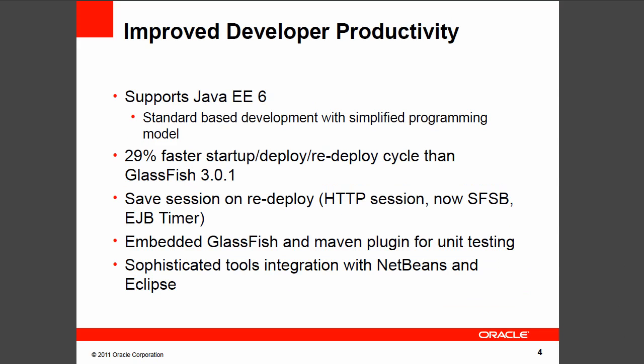One of the goals of the 3.1 release was to deliver a first-class development environment for our developers. GlassFish 3.1 supports Java EE 6, which advances the ease of development features introduced in Java EE 5, improving developer productivity. The heavy use of annotations in EE 6 results in more plain old Java objects and far less XML configuration, resulting in fewer developer artifacts to create, manage, and maintain.